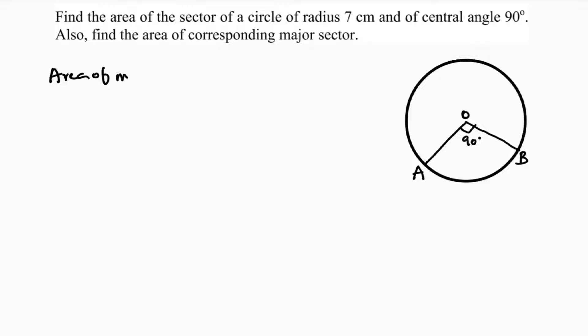Area of minor sector, the formula is theta by 360 into pi r squared. So theta is here 90 degrees by 360 into 22 by 7, and here radius is 7, so 7 into 7.